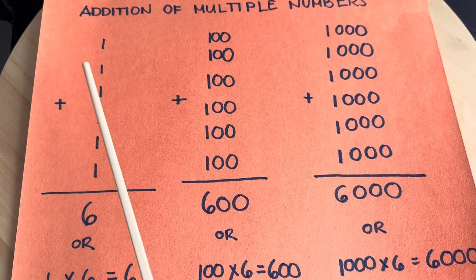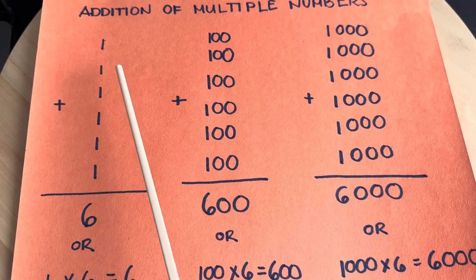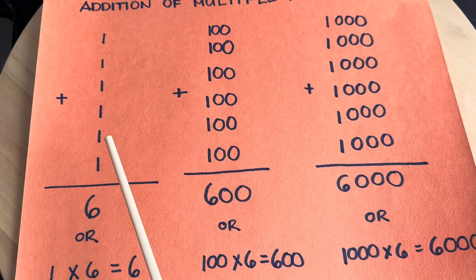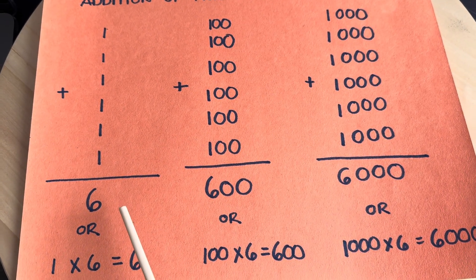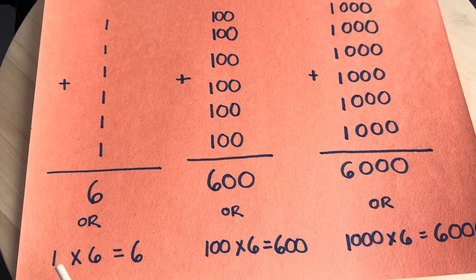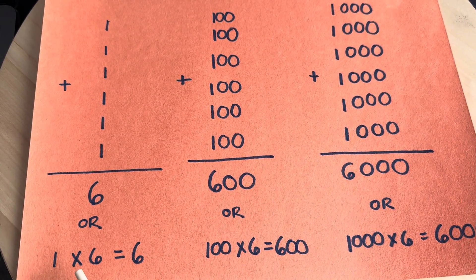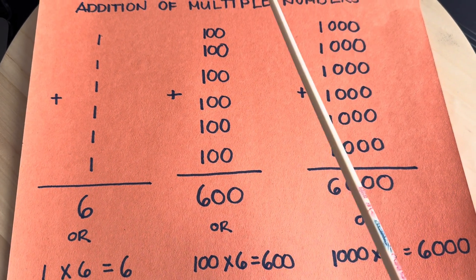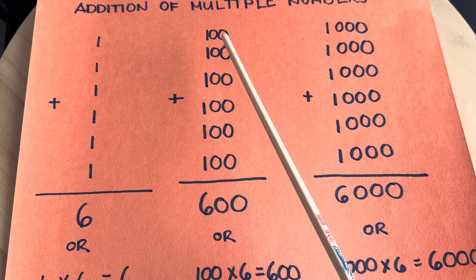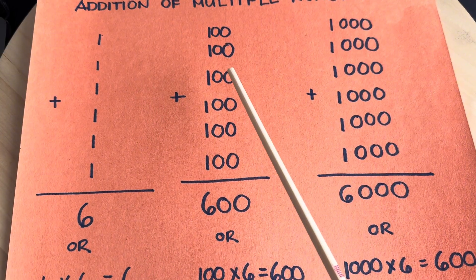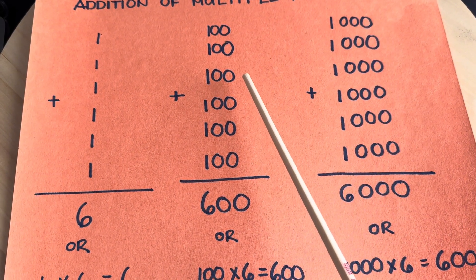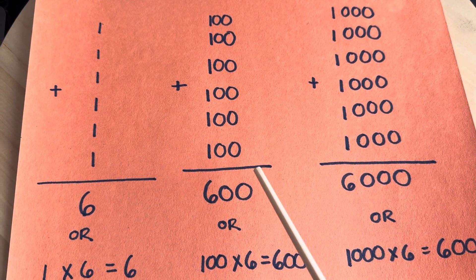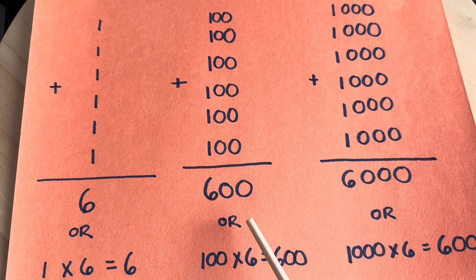Example number 1: 1 plus 1 plus 1 plus 1 plus 1 plus 1 is equals to 6, or in multiplication, 1 times 6 is equals to 6. Example number 2: 100 plus 100 plus 100 plus 100 plus 100 plus 100 is equals to 600.